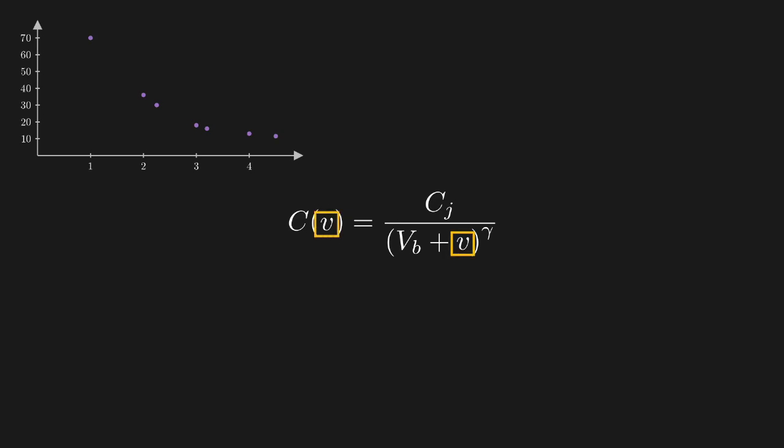Here, v is the externally applied voltage, which is the independent variable. vb is a known constant called the barrier potential, so it's something that we don't have to solve for. cj and gamma are the unknown parameters that we wish to find suitable values for.